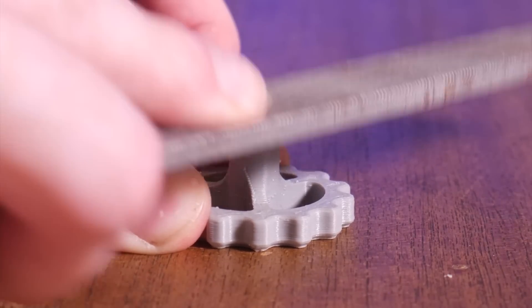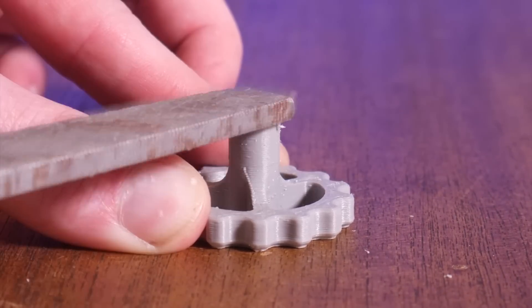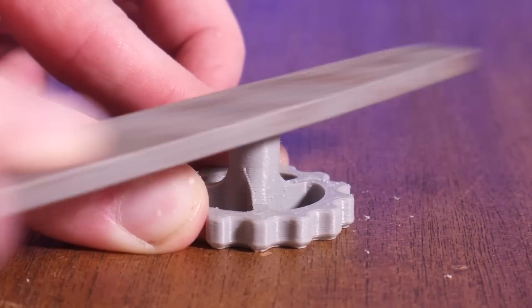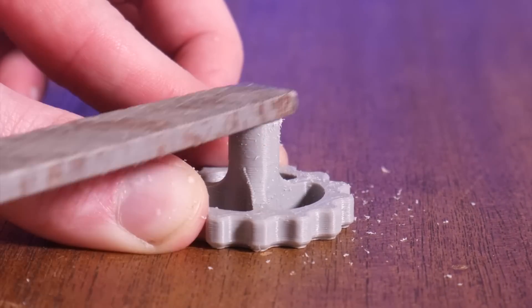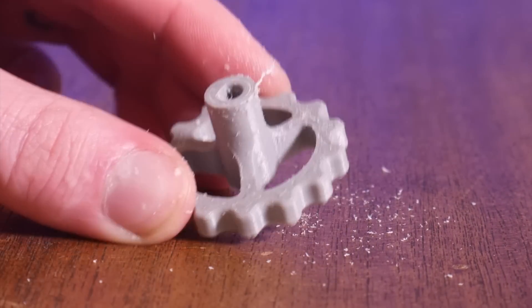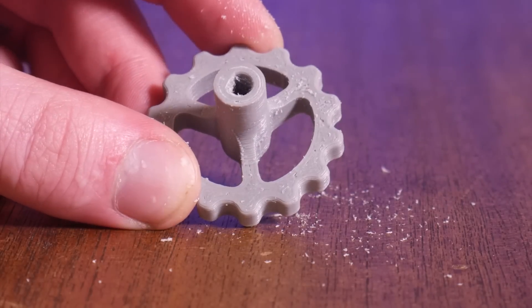Unlike PLA or PETG, ABS can be easily filed and sanded without the fear of melting or deforming the model from the heat caused by friction. Also, it can be acetone vapor smooth to give a nice glossy finish and hide some layer lines.